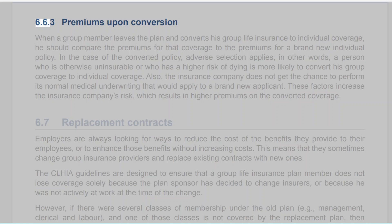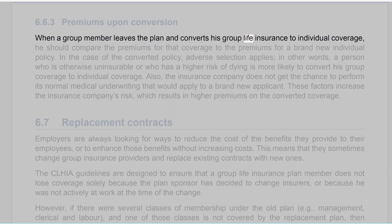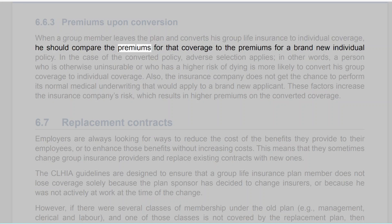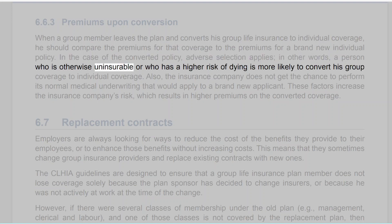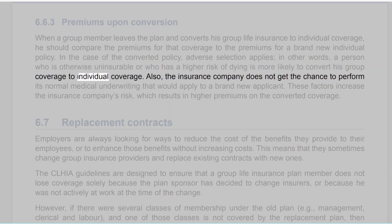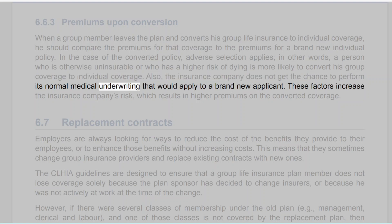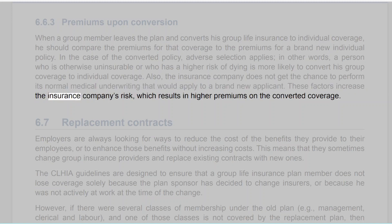6.6.3 Premiums upon Conversion. When a group member leaves the plan and converts his group life insurance to individual coverage, he should compare the premiums for that coverage to the premiums for a brand new individual policy. In the case of the converted policy, adverse selection applies — a person who is otherwise uninsurable or who has a higher risk of dying is more likely to convert his group coverage to individual coverage. Also, the insurance company does not get the chance to perform its normal medical underwriting. These factors increase the insurance company's risk, which results in higher premiums on the converted coverage.